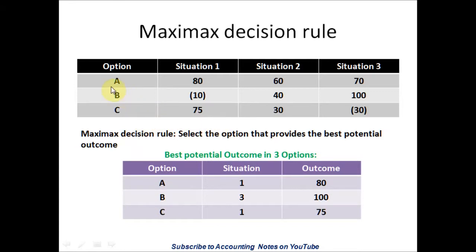Let's start with Option A. For Option A, Situation 1 gives a profit of $80, Situation 2 is $60, and Situation 3 is $70. Out of the three situations for Option A, the highest potential outcome is $80, so we bring $80 down — Option A, Situation 1 is $80.